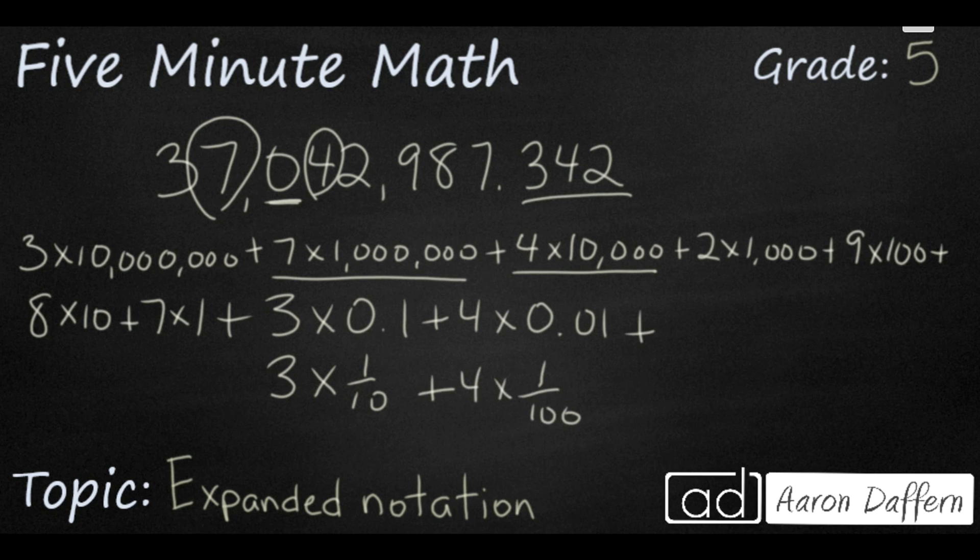Finally, you have a 2. And 2 is in the thousandths place. So, 0.001 as a decimal, or 2 times 1 over 1000 as a fraction.